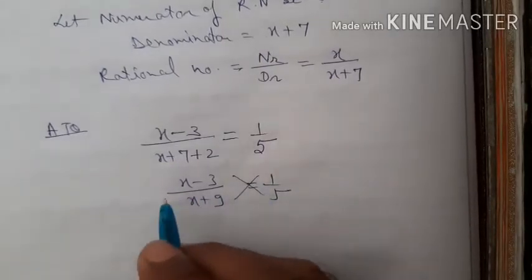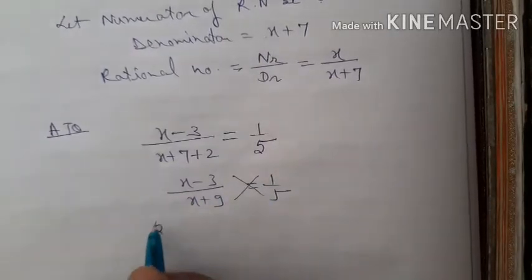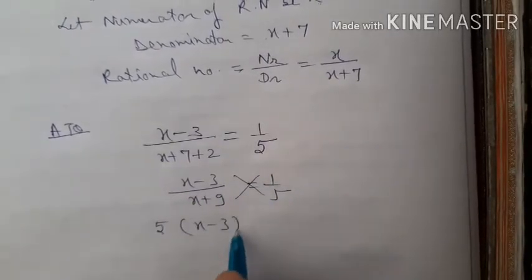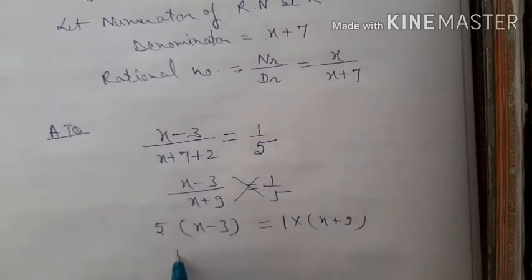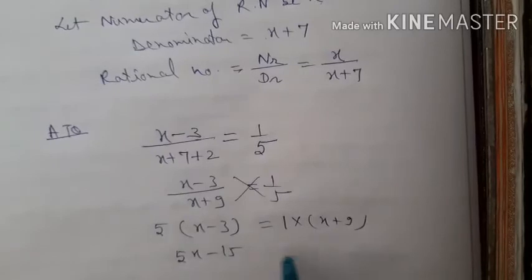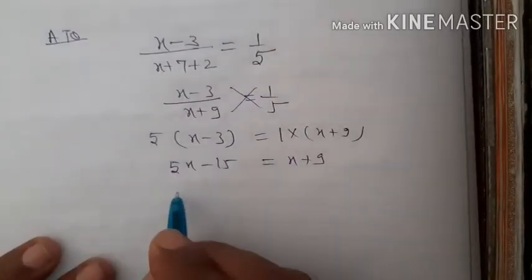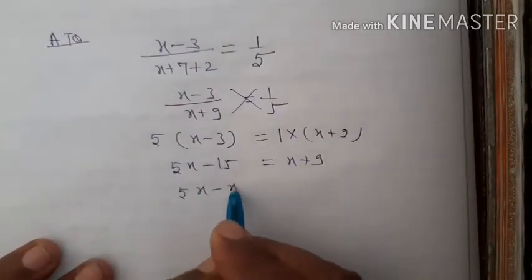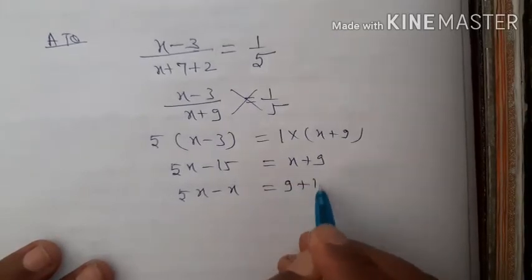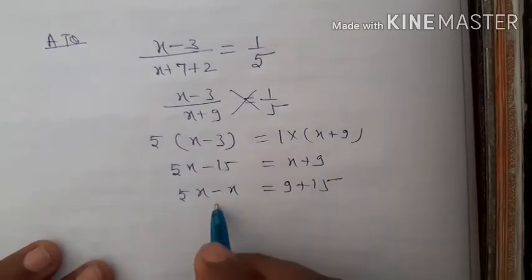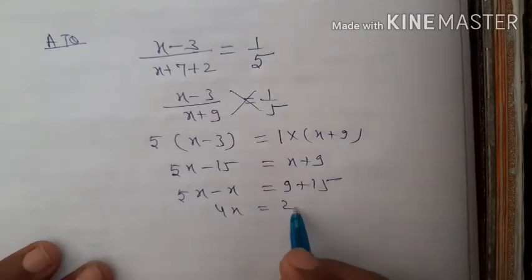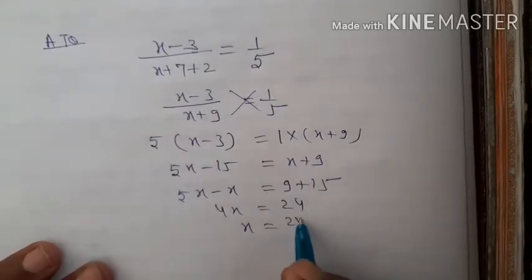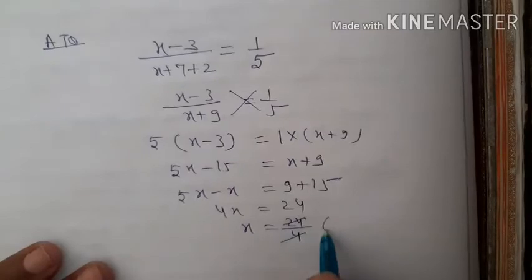Cross multiplying: 5 into (x minus 3) equals 1 into (x plus 9). Expanding: 5x minus 15 equals x plus 9. Bringing variables to one side: 5x minus x equals 9 plus 15, so 4x equals 24, therefore x equals 6.